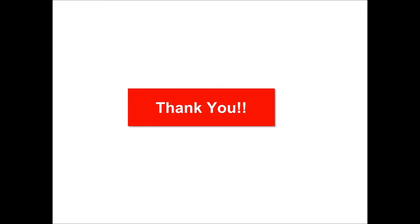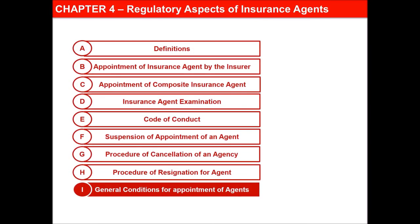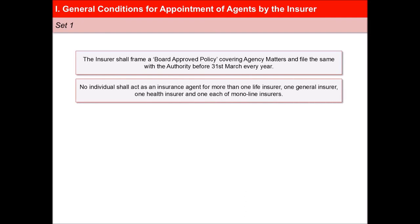In this last video of the lesson Regulatory Aspects of Insurance Agents, we will learn about the general conditions for the appointment of agents. The insurer shall frame a board-approved policy covering agency matters and file the same with the authority before 31st March every year. No individual shall act as an insurance agent for more than one life insurer, one general insurer, one health insurer, and one each of monoline insurers.